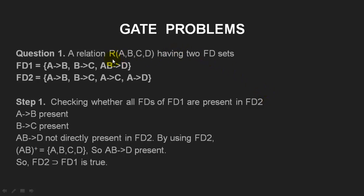You have been given a relation R with attributes A, B, C, D and two FD sets, FD1 and FD2. We will see whether we can determine all FDs of FD1 from FDs of FD2. The first FD, A determining B, is also present in FD2. B determining C is also present in FD2. AB determining D is not directly present in FD2, but we will see whether we can determine it or not.